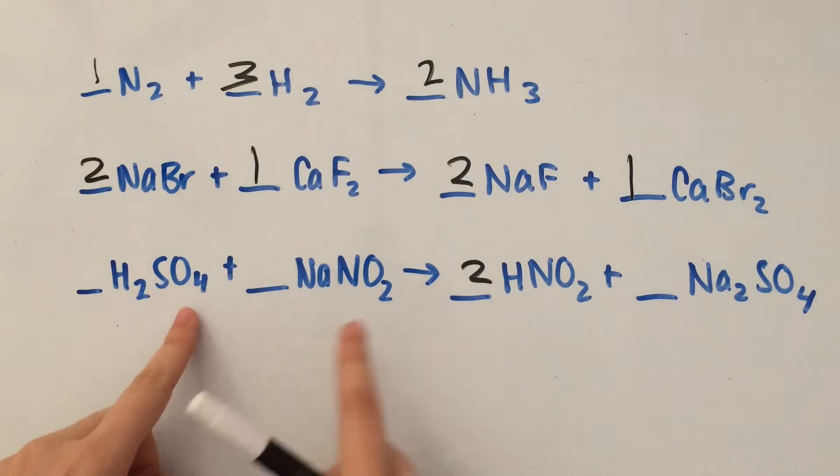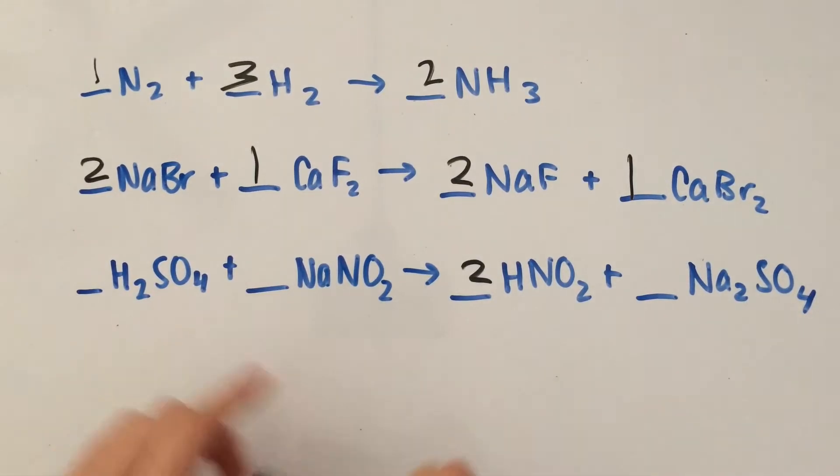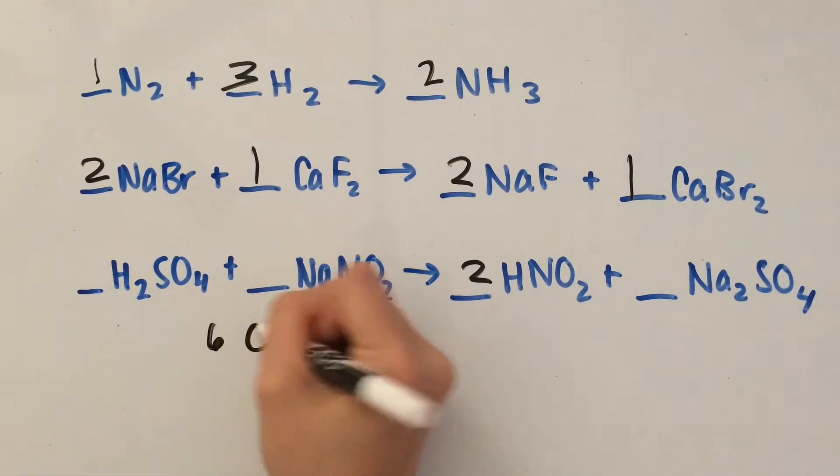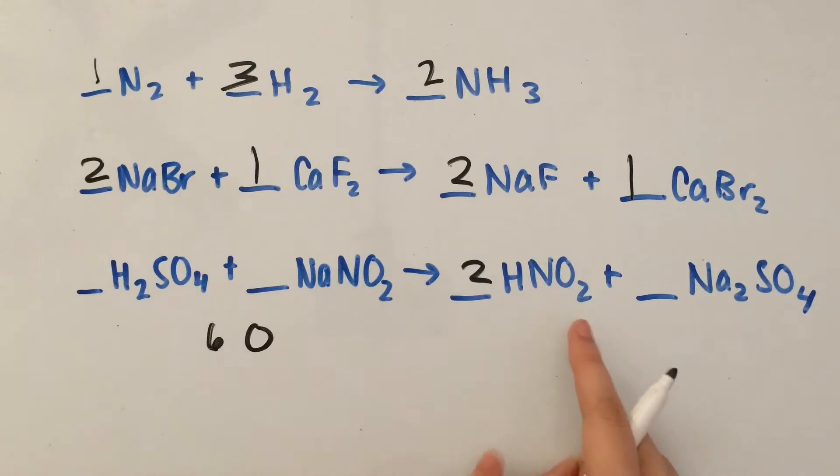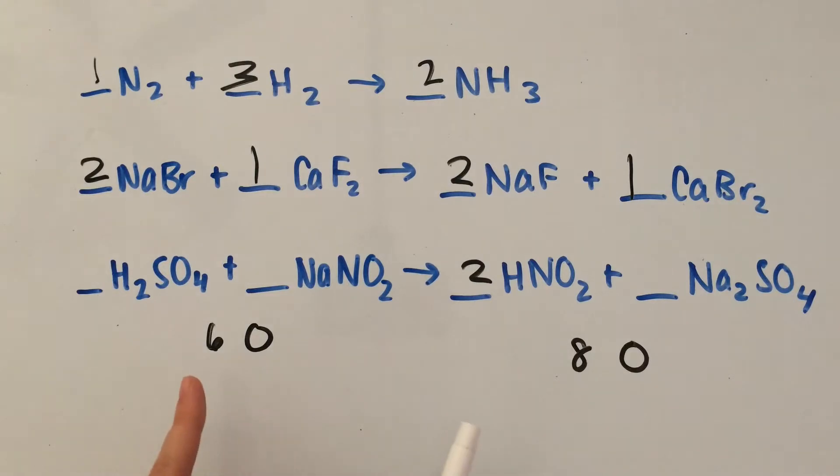Now oxygen. Remember, don't forget about the other compounds on the left side of the equation. We have four plus two, so that means we have six O's in total. Over here we have two times two is four - four oxygens. And here we have another four, so that's eight O's.